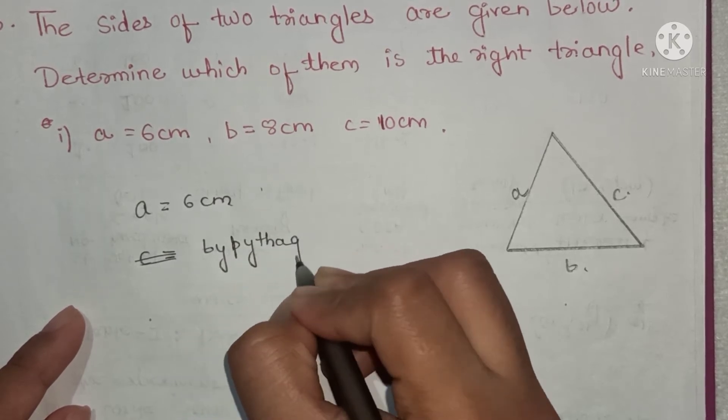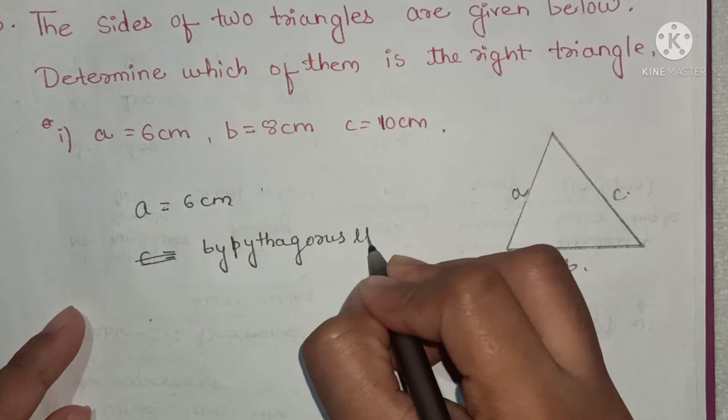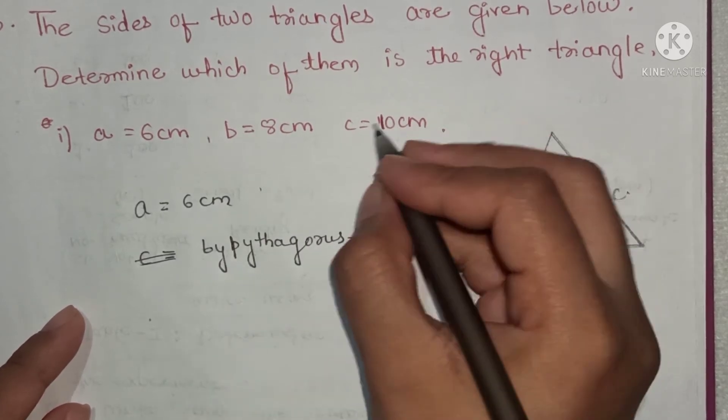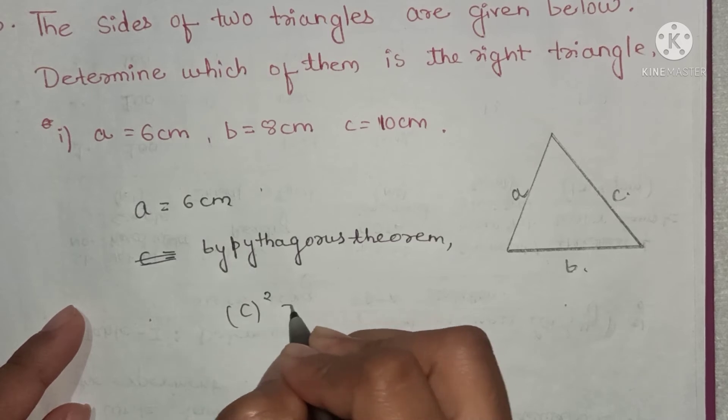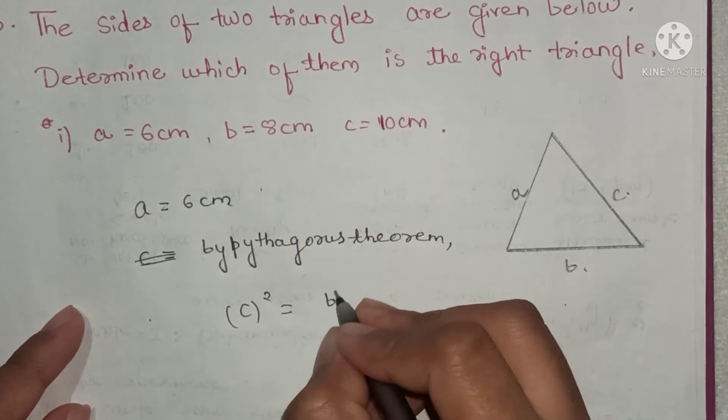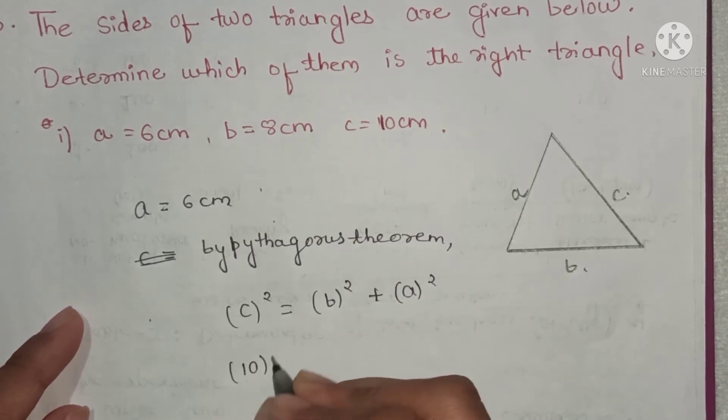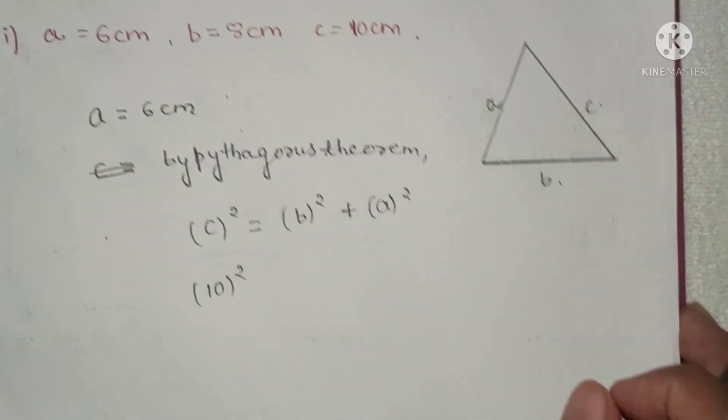What is the Pythagoras theorem? The hypotenuse squared, c squared, will be the sum of the other two sides: b squared plus a squared. So c is 10, find 10 squared, and find 8 squared plus 6 squared.